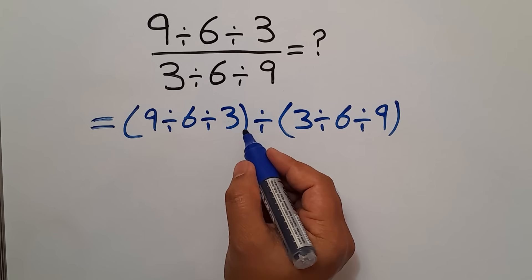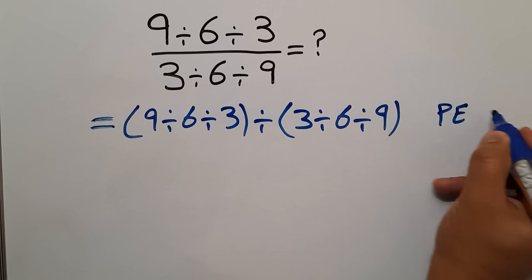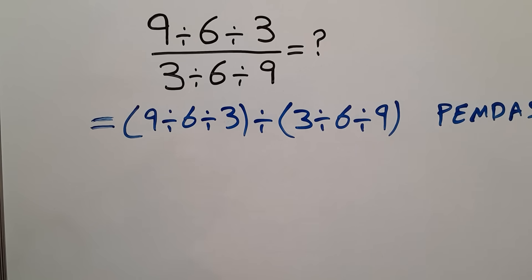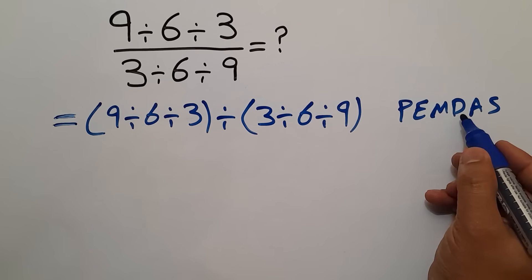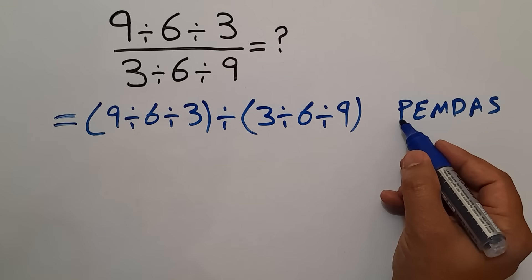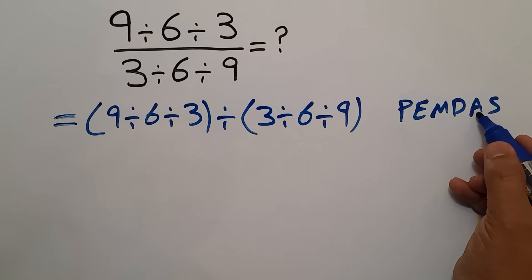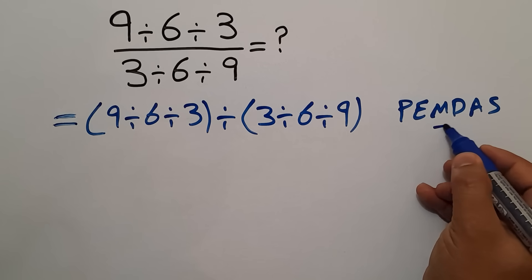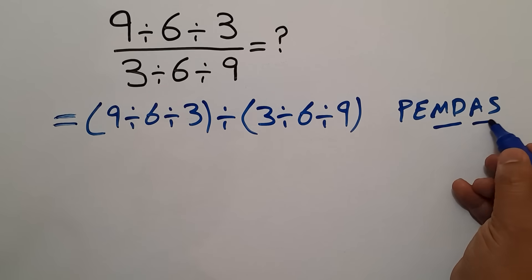According to the order of operations, which is PEMDAS: P stands for parentheses, E stands for exponents, M and D stands for multiplication and division, and A and S stands for addition and subtraction. We first do parentheses, then exponents, then multiplication and division, and finally addition and subtraction. Remember that multiplication and division have equal priority and we work from left to right, and the same applies to addition and subtraction.